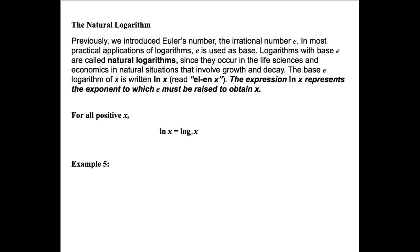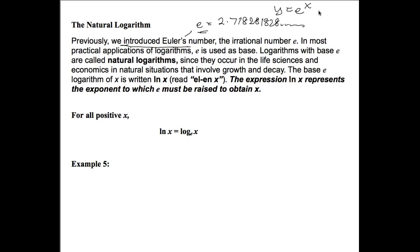The next kind of base logarithm used in real life situations is the natural logarithm. We previously introduced Euler's number e, which was 2.718281828 and kept going. This was a transcendental number — non-repeating and non-terminating — but it has special properties and was called the exponential function when we had y equals e to the x.